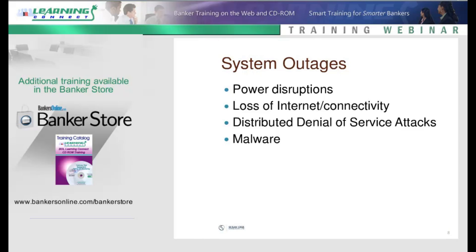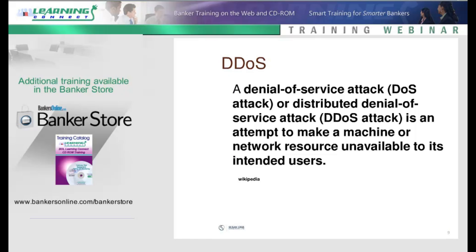Now, system outages. These typically are probably what you deal with more frequently, and especially more frequently from power-related issues. Storms knock out electricity, construction work is taking place and they knock out the power or the internet — street crews are digging up the street and they knock out cabling. So we lose electrical power, we lose the internet. But there are also issues caused by denial of service attacks and the malware we were just talking about.